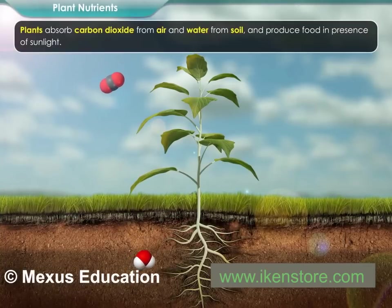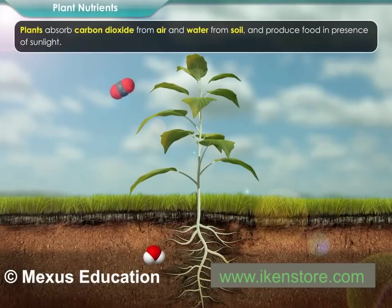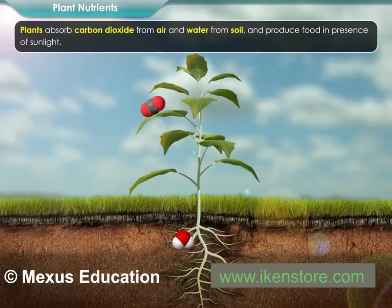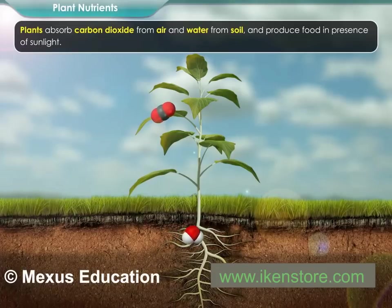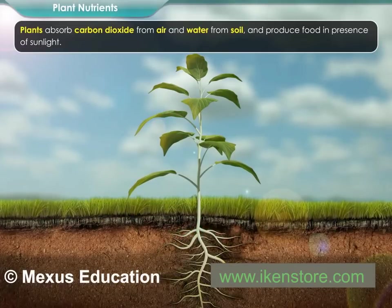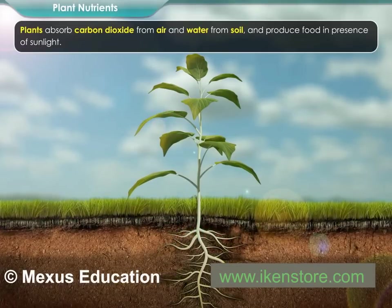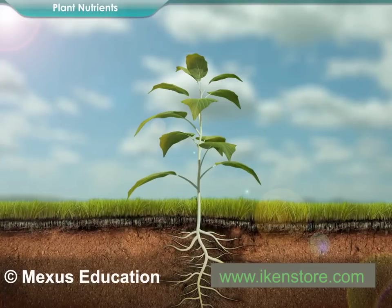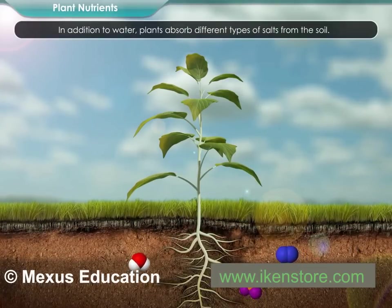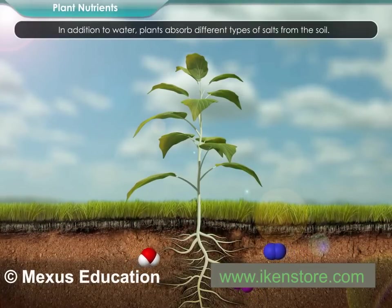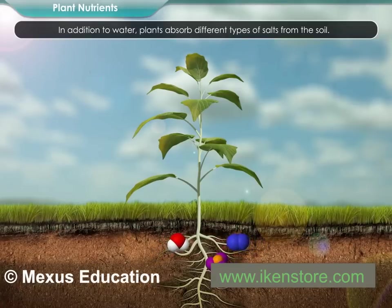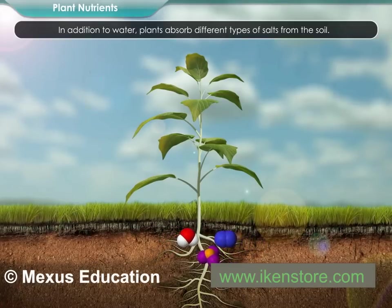Plants absorb carbon dioxide from air and water from soil, and produce food in the presence of sunlight. In addition to water, plants absorb different types of salts from the soil.